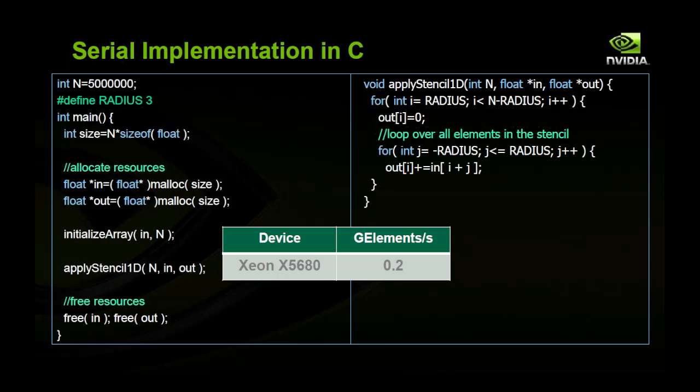All right. So we do this. And on a Xeon X5680, we get about 0.2 gigaelements a second.